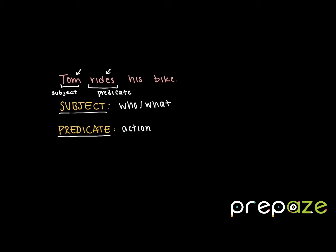So now we've identified both our subject and our predicate. For any sentence, it is mandatory that we have both. Any sentence that is missing a subject or a predicate isn't a sentence at all.